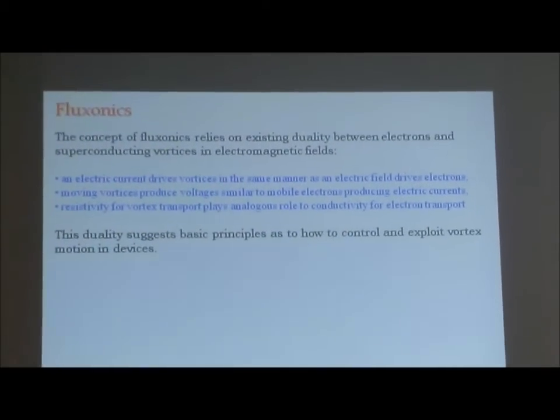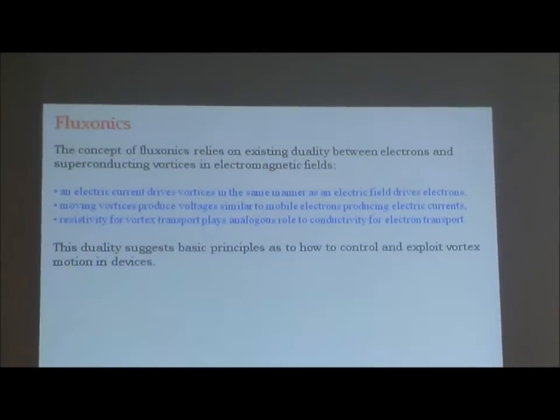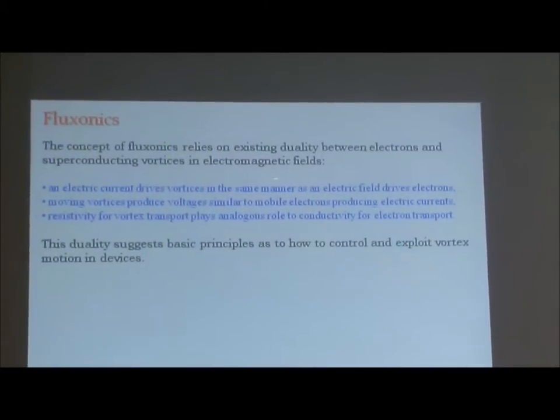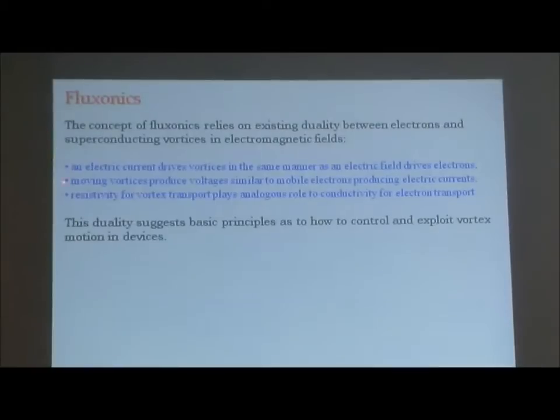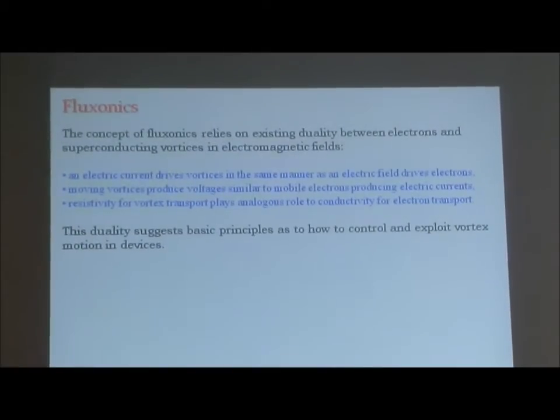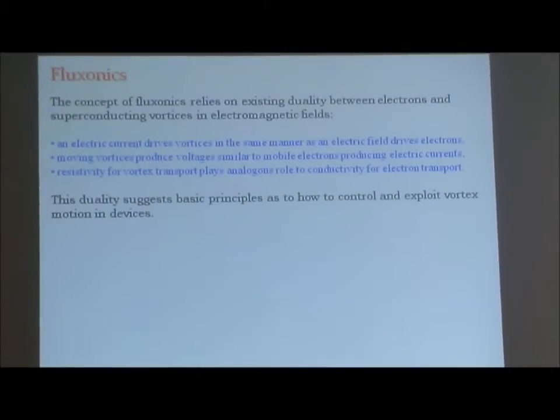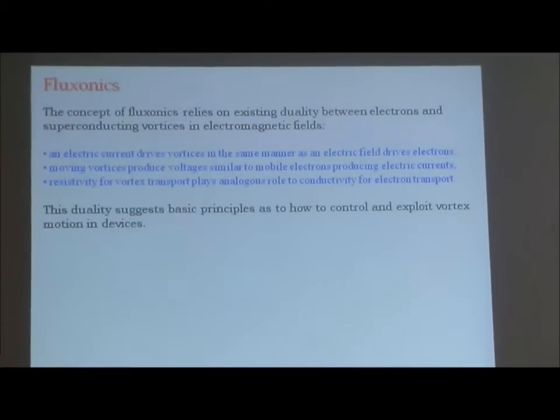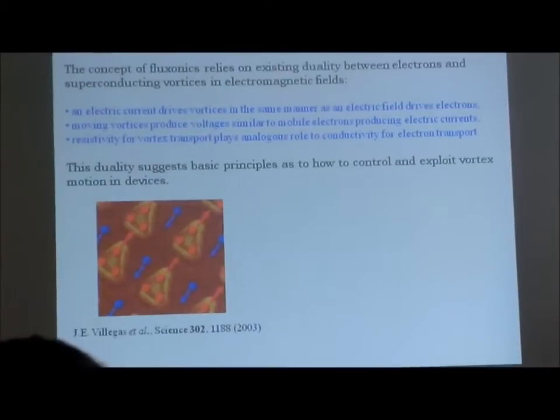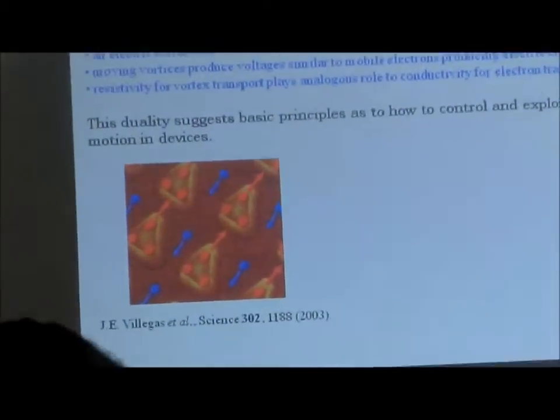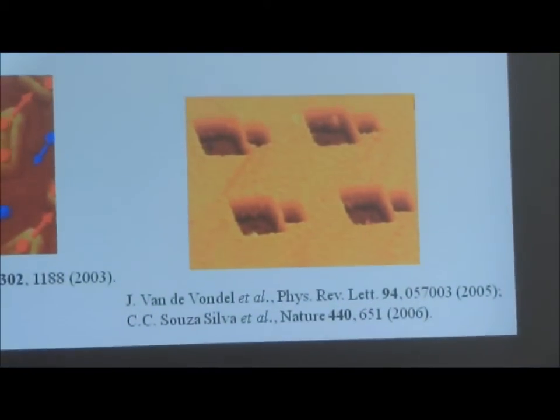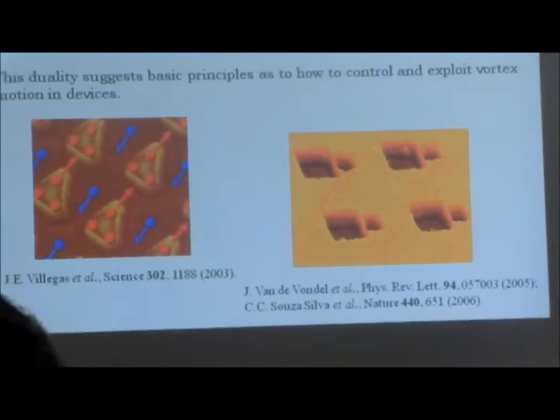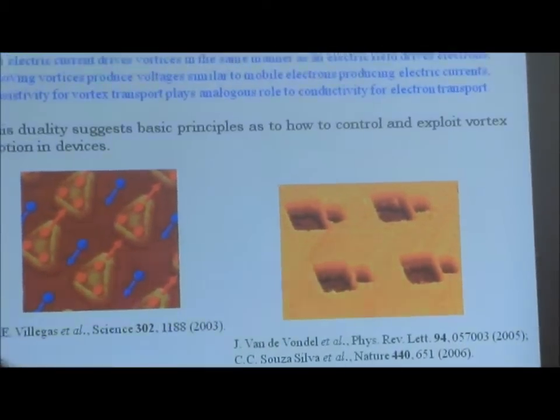Once we realized how to do this, people said can we use this knowledge to make something useful out of vortex pinning? Fluxonics came from analogy to electronics. Vortices and electrons as electromagnetic fields have certain duality, in a sense that electric current drives vortices the same like electric field drives electrons. You have moving vortices that produce voltages like electrons produce currents. And resistivity of vortex transport is basically the conductivity of electron transport. More or less everything we know for electrons we can apply to vortices and try to control their motion in a certain fashion. The first device that was made was actually a ratchet device, which will remove vortices from the system. If you have asymmetric potentials created and one AC drive, vortices will move in one direction always, and vortices will be removed from the system.